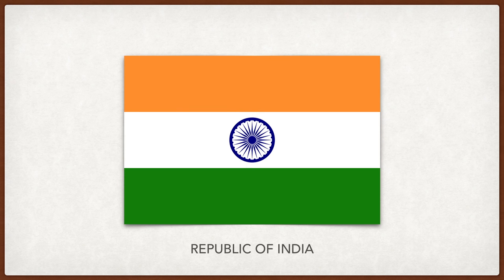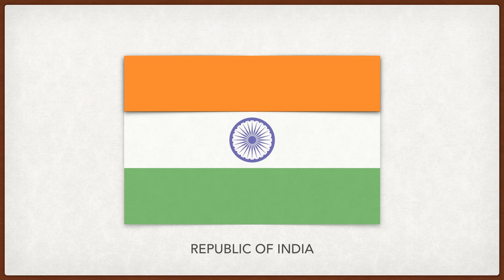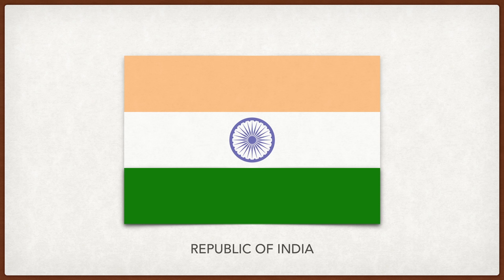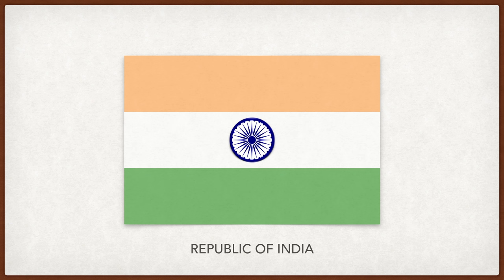India. The saffron represents the Hindu population, the green the Muslim population, and in the center the Ashoka Chakra represents the eternal wheel of law.